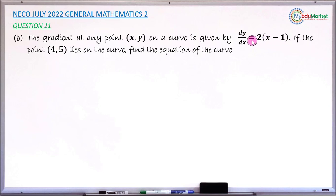So this is the derivative of the curve y. The question says if a point (4, 5) lies on the curve, this is just one point on the curve. The question asks us to find the equation of the curve, that is, find y. So let's attempt to answer this question together.